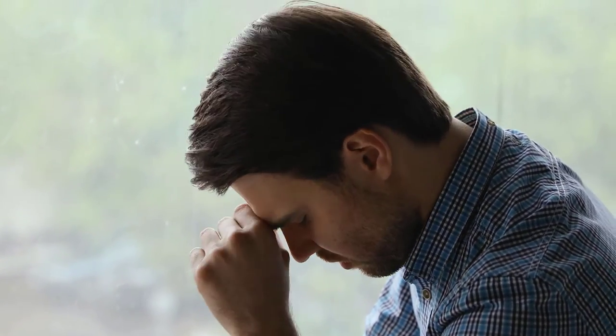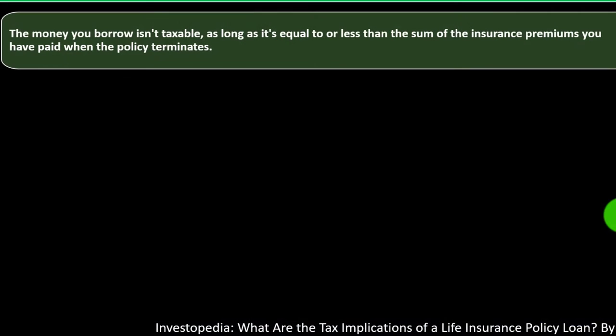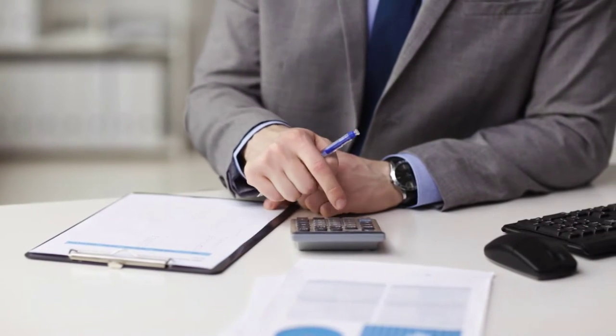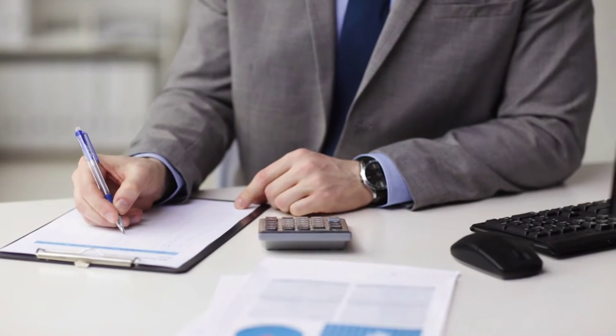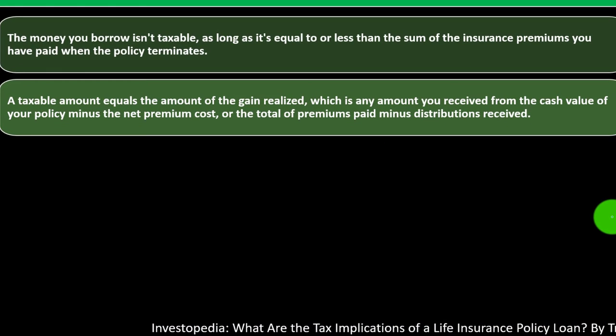This gets a bit confusing with life insurance compared to an IRA. With an IRA, you get a tax benefit when you put money in — that's your principal investment — and all the earnings would be subject to tax. With insurance, the premiums you put in didn't receive a tax benefit, so when you pull the money out you wouldn't have a tax consequence on that portion. It's the earnings where you might have a tax consequence if you pull the money out or terminate the policy. The taxable amount equals the gain realized: any amount you receive from the cash value minus the net premium cost.